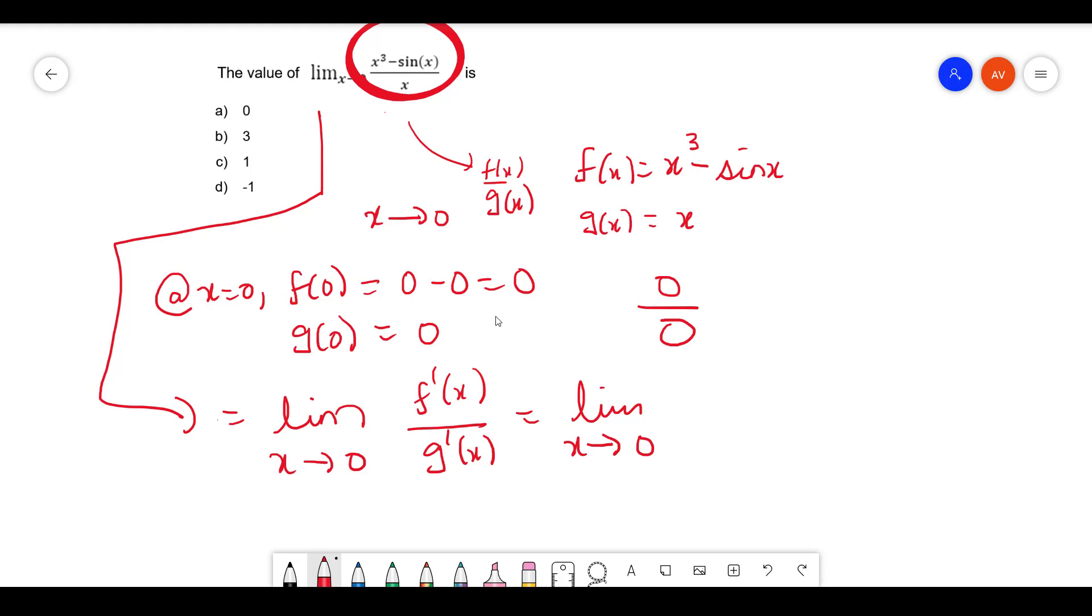What is f'? We can write f'(x) equals 3x² minus cos(x). This is differentiation with respect to x. And g'(x) is 1 because it is x. So you can write it as f'(x) by g'(x), which is this by 1.